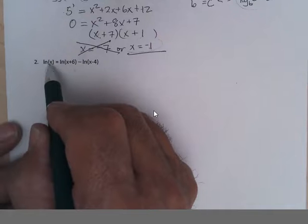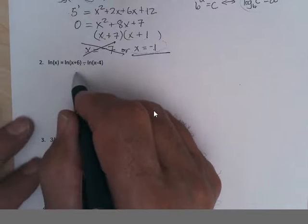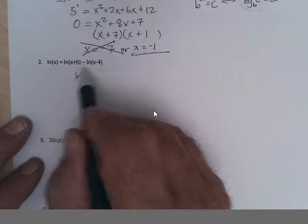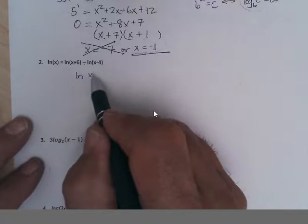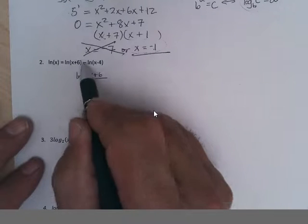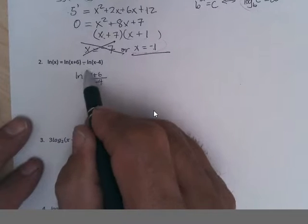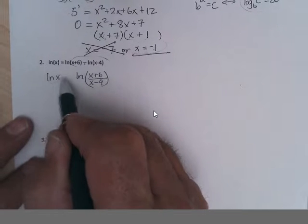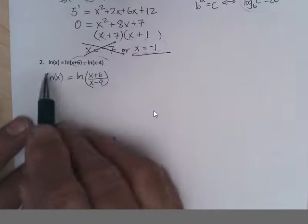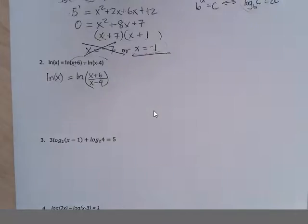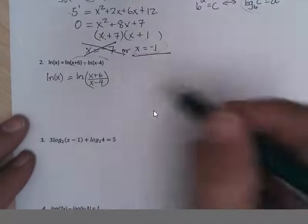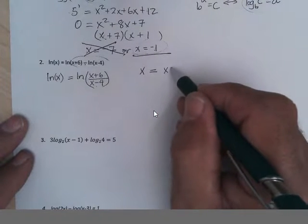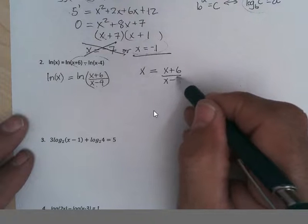Now this one, we've got subtraction. So this says ln of, when you subtract, it's the positive one, x plus 6, over the one that's being subtracted, x minus 4. That's what this side would simplify to, and this side is ln x. So it's ln of both of them, so we can say this must equal that. So x must equal x plus 6 over x minus 4.